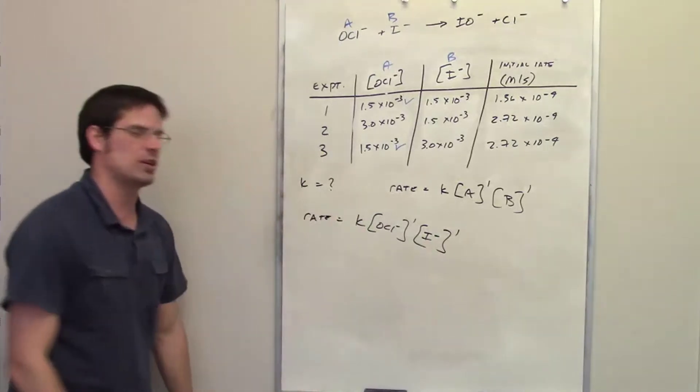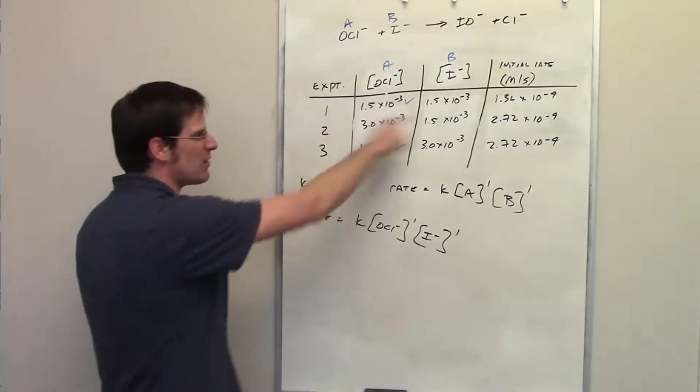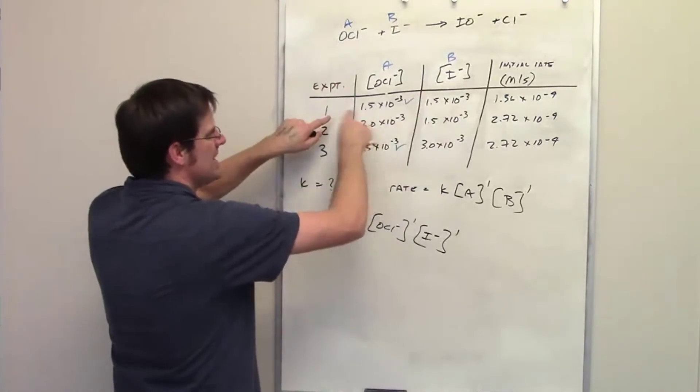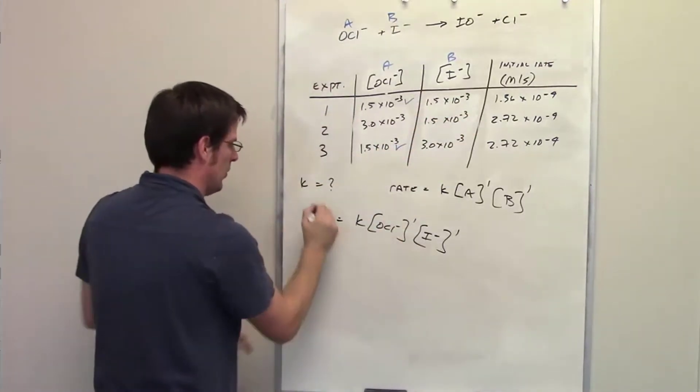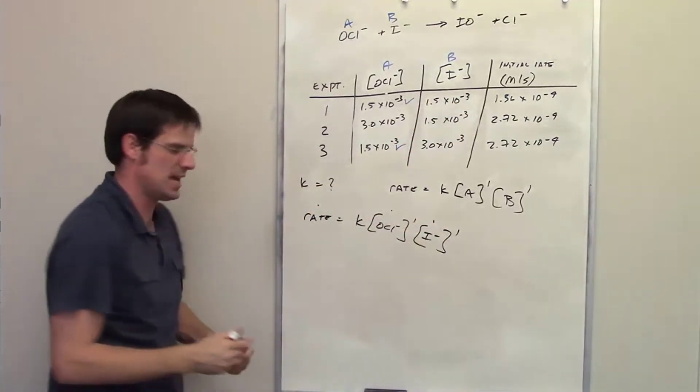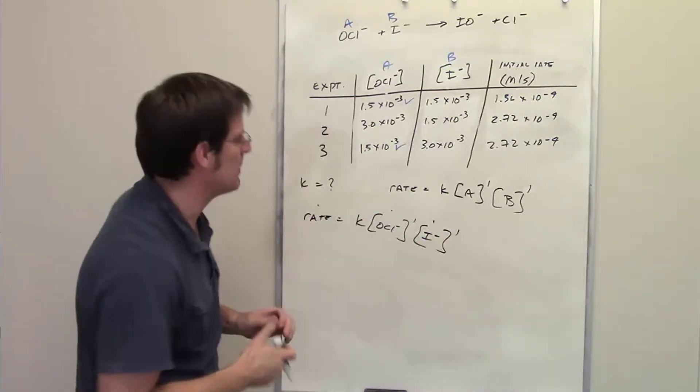It's asking me to solve for K. How do I do that? Well I pick whichever of these experiments I want, and I just throw in the numbers into these holes here, here, and here, and solve for K.